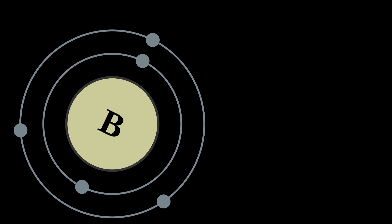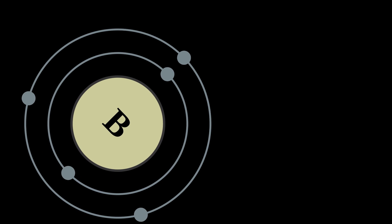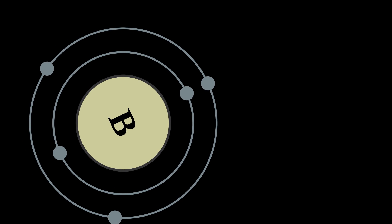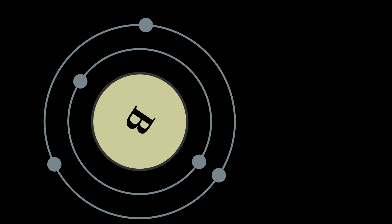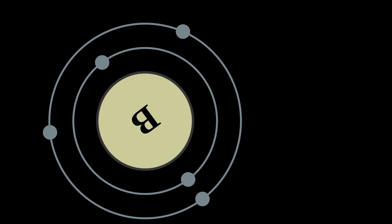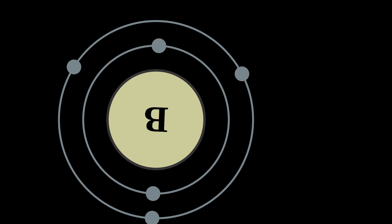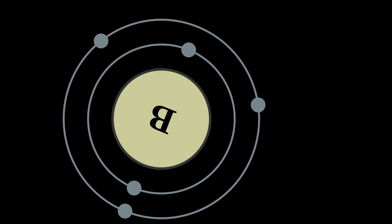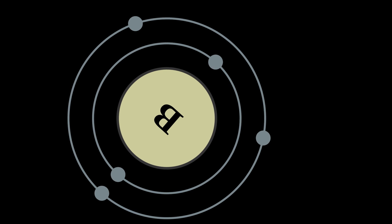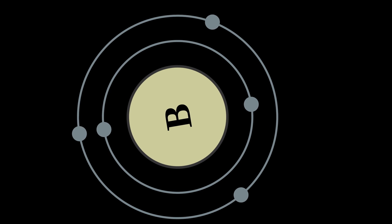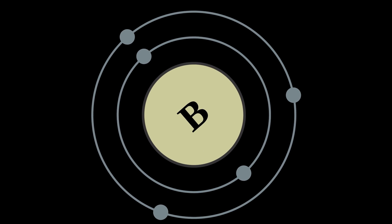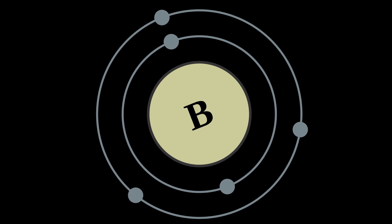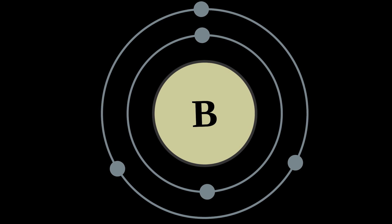Elemental boron is a metalloid that is found in small amounts in meteoroids, but chemically uncombined boron is not otherwise found naturally on Earth. Industrially, very pure boron is produced with difficulty because of refractory contamination by carbon or other elements. Several allotropes of boron exist.